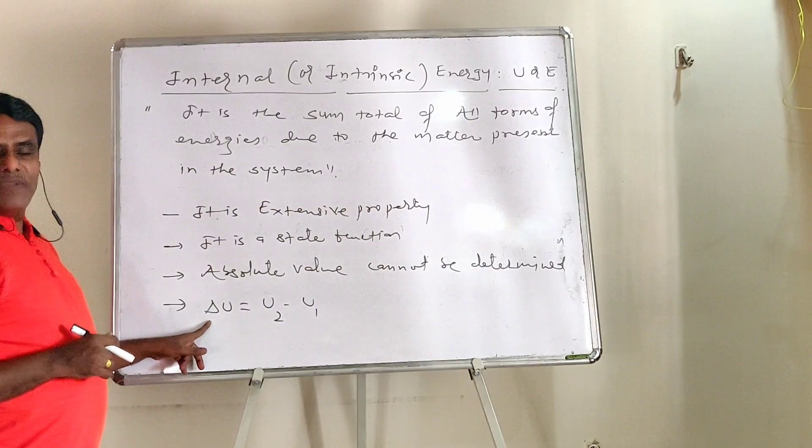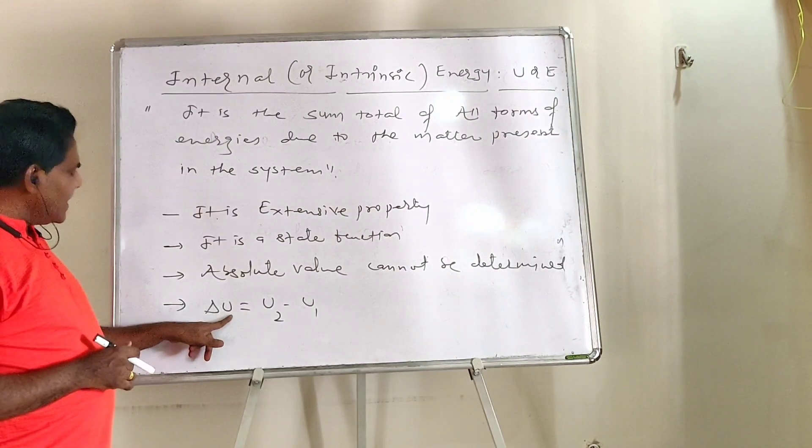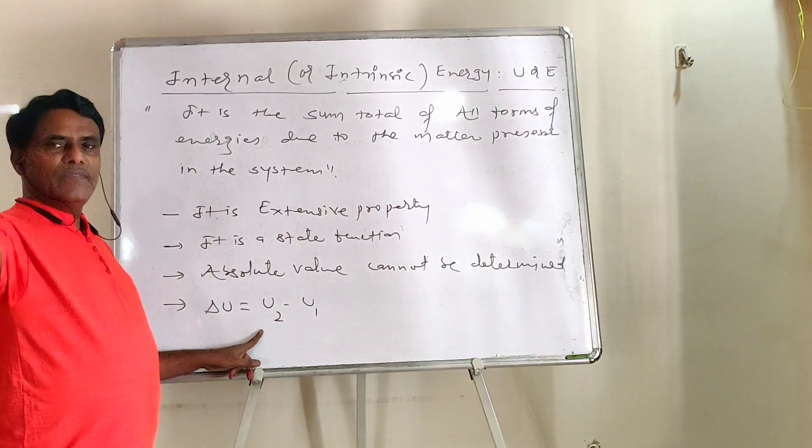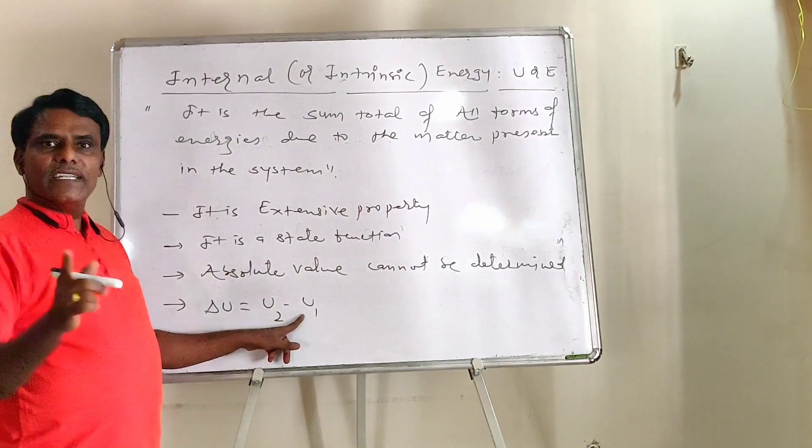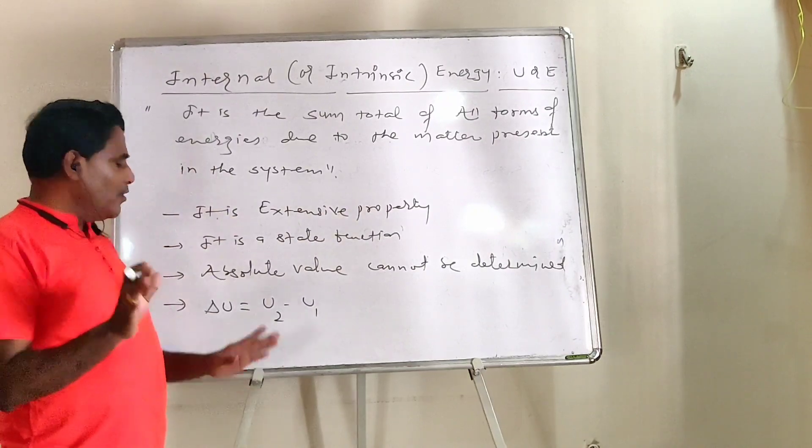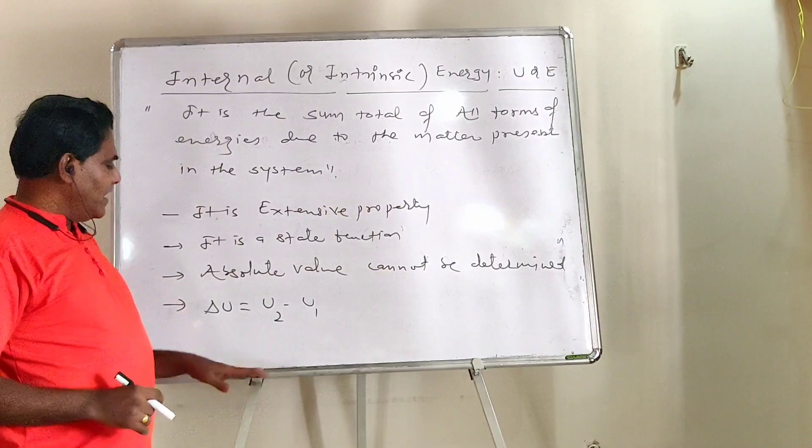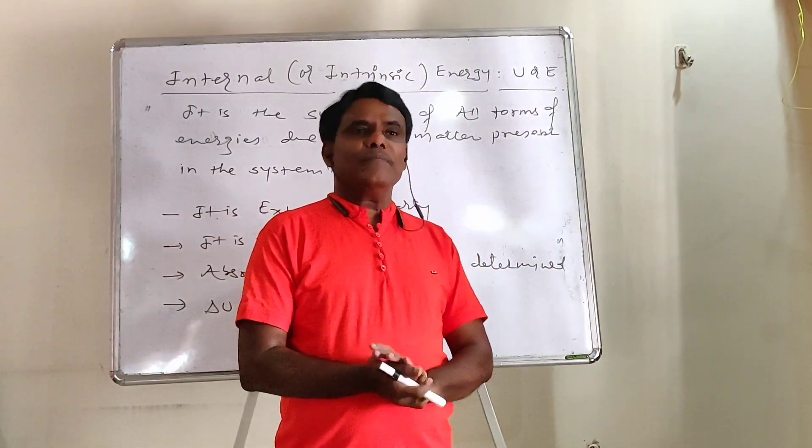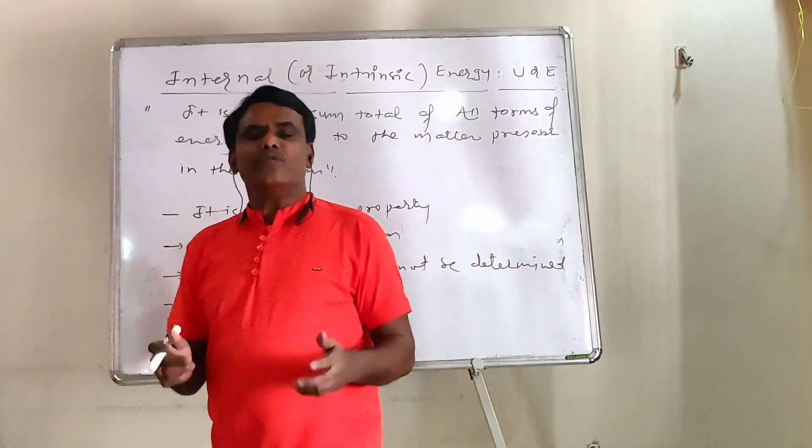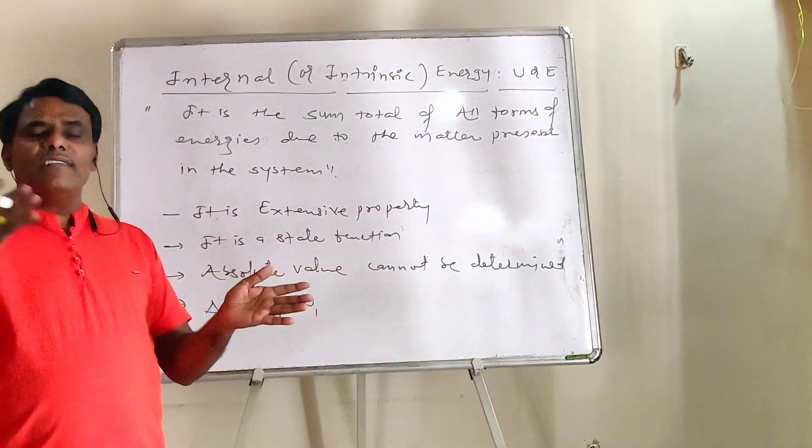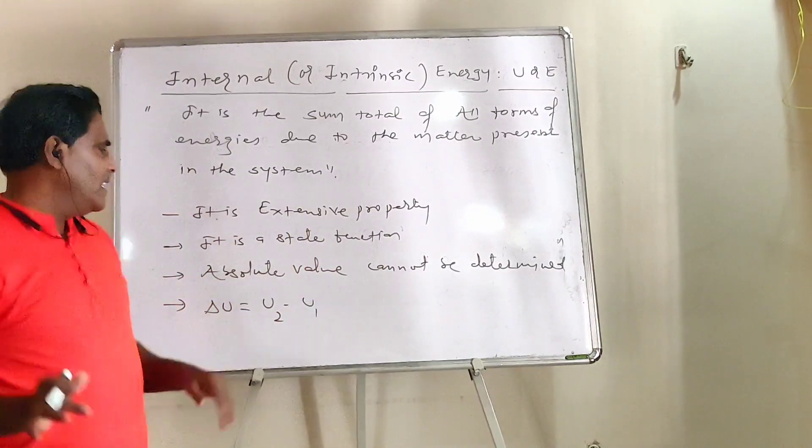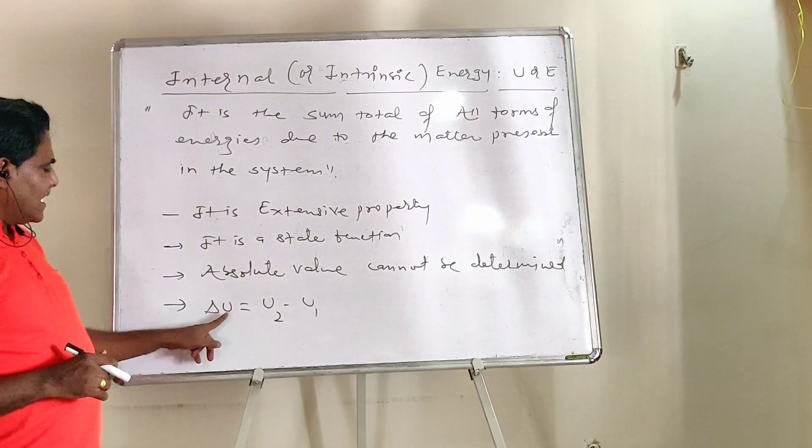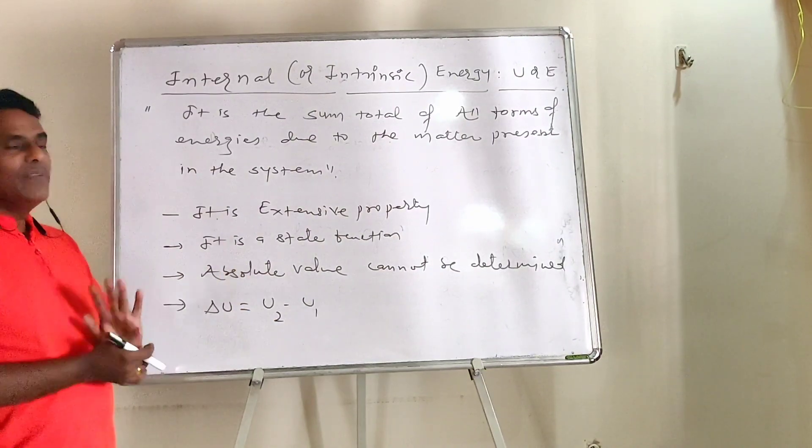But change in internal energy can be calculated. And change in internal energy delta U is equal to U2 minus U1. U2 is internal energy in final state, U1 is internal energy in initial state. And thermodynamics deals with only change in internal energy. Scientists are interested in change in internal energy of the system. What matters is not what the system's energy was initially or what it is now exactly, but the change in internal energy of the system. And that delta U, internal energy change, can be calculated.